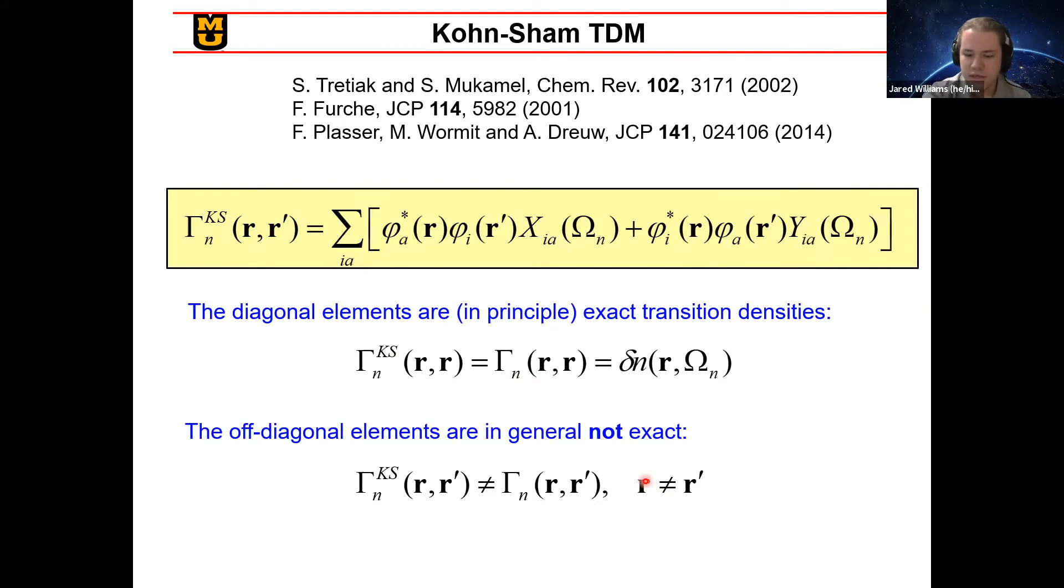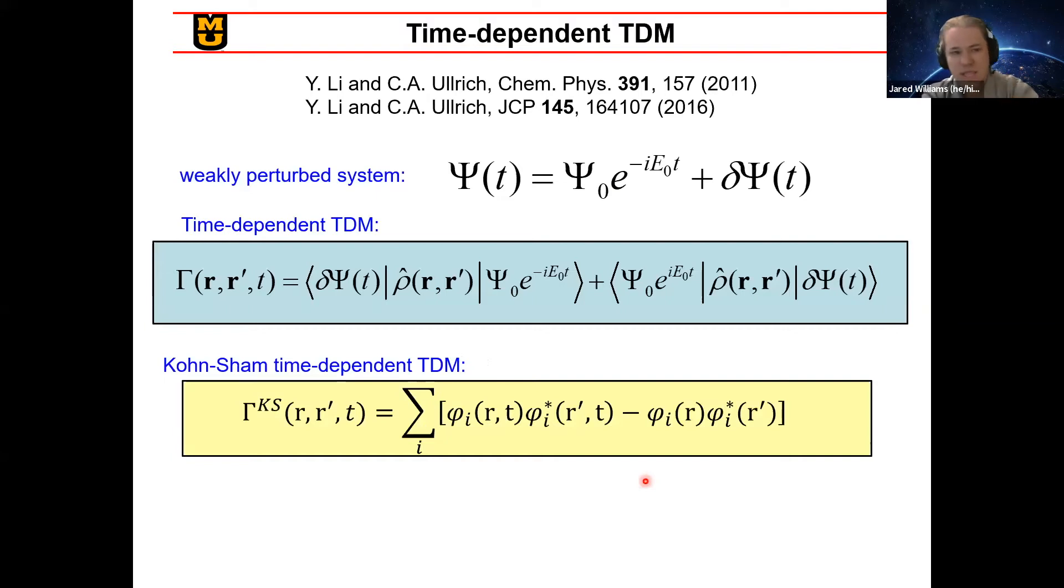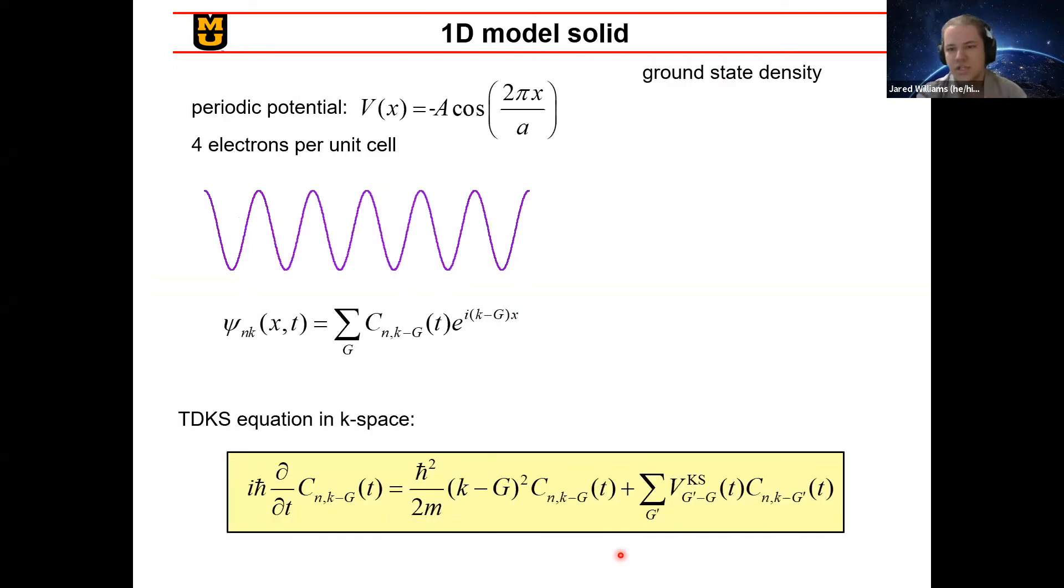But the alternative approach and the one that we wanted to look at with this work is a time-dependent or real-time way to look at this. So if we take a weakly perturbed system where we assume that the system is in its ground state plus a small deviation, we can then define the time-dependent transition density matrix. And then similarly to the previous method, we can come up with this Kohn-Sham time-dependent TDM that essentially depends on the difference between products of orbitals.